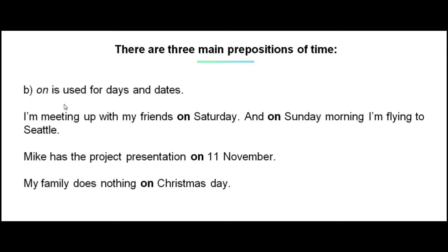The next preposition is 'on.' On is used for days and dates. Have a look at the examples below: I'm meeting up with my friends on Saturday, and on Sunday morning I'm flying to Seattle. In these sentences, the prepositions of time 'on' are used for days — Saturday and Sunday. Mike has the project presentation on 11th November — 'on' is used for the date. My family does nothing on Christmas Day — again, 'on' is used for the date Christmas Day.